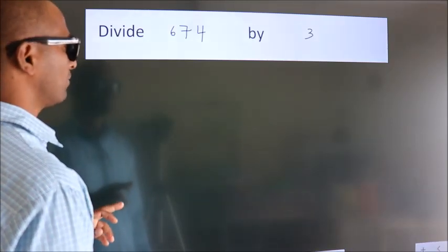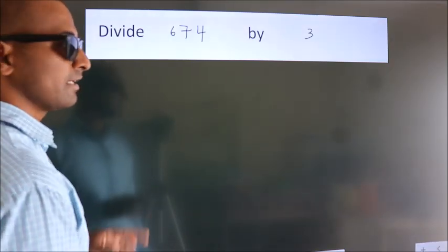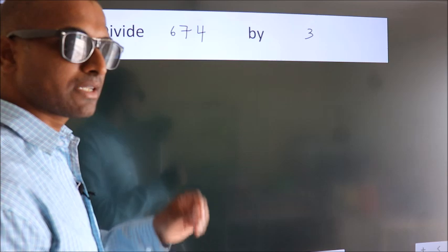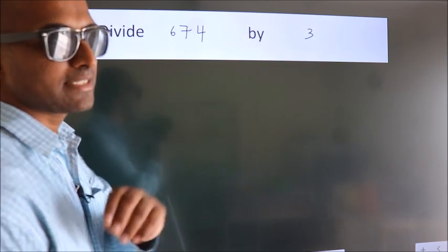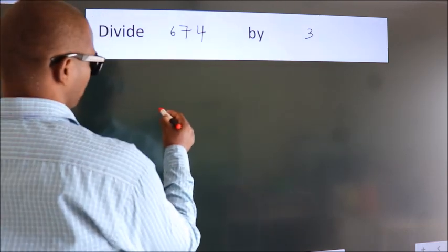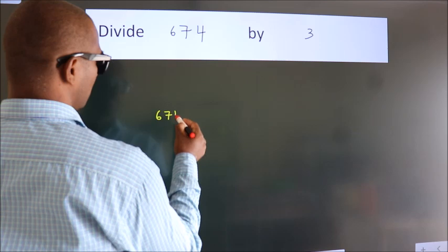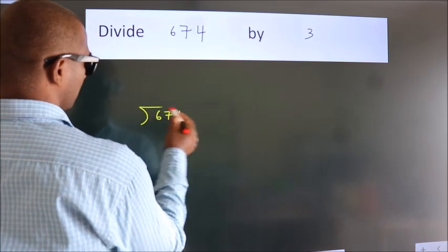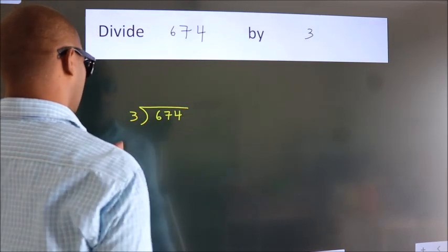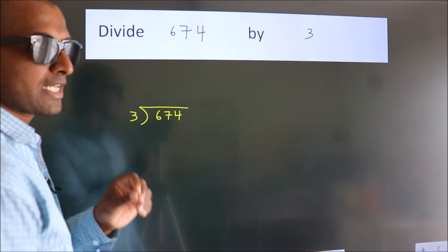Divide 674 by 3. To do this division, we should frame it in this way: 674 here, 3 here. This is your step 1.